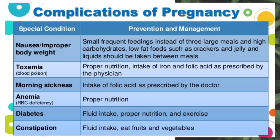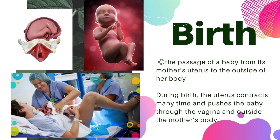Complications of pregnancy and their prevention and management: Nausea or improper body weight — small, frequent feedings instead of three large meals; high-carbohydrate, low-fat foods such as crackers and jelly; liquids should be taken between meals. Toxemia (blood poisoning) — proper nutrition, intake of iron and folic acid as prescribed by the physician. Morning sickness — intake of folic acid as prescribed by the doctor. Anemia (RBC deficiency) — proper nutrition. Diabetes — fluid intake, proper nutrition, and exercise. Constipation — fluid intake, eat fruits and vegetables.